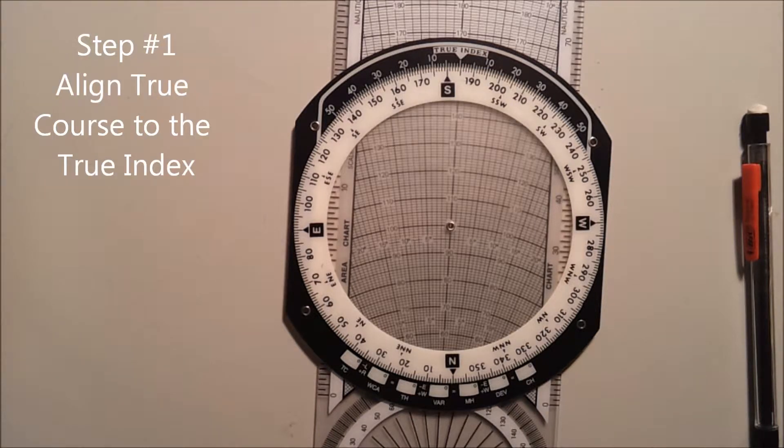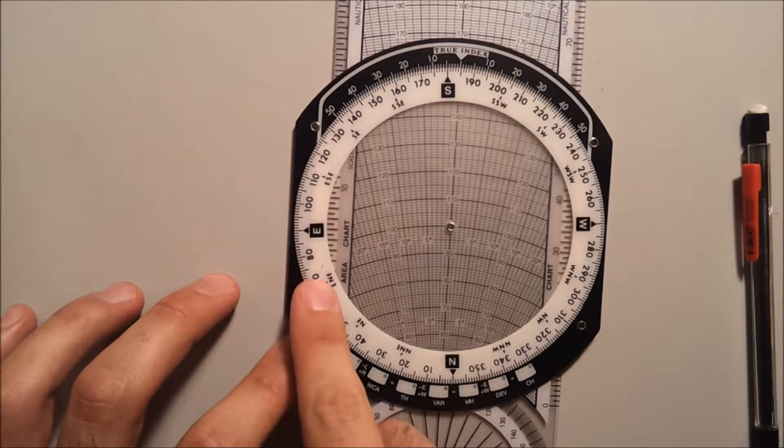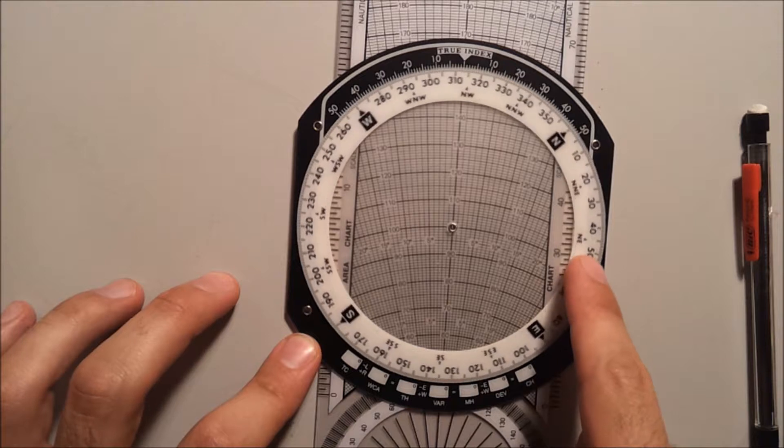We will start by aligning our true course to the true index on our E6B. For our exercise we will use 340 degrees.